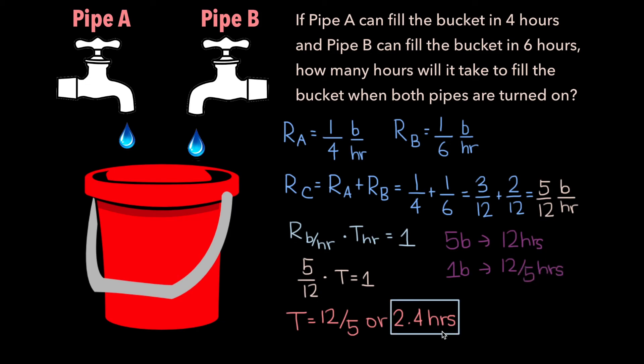So to wrap everything up, if pipe A takes 4 hours to fill the bucket and pipe B takes 6 hours, when both pipes are turned on, it takes 2.4 hours to fill the bucket.